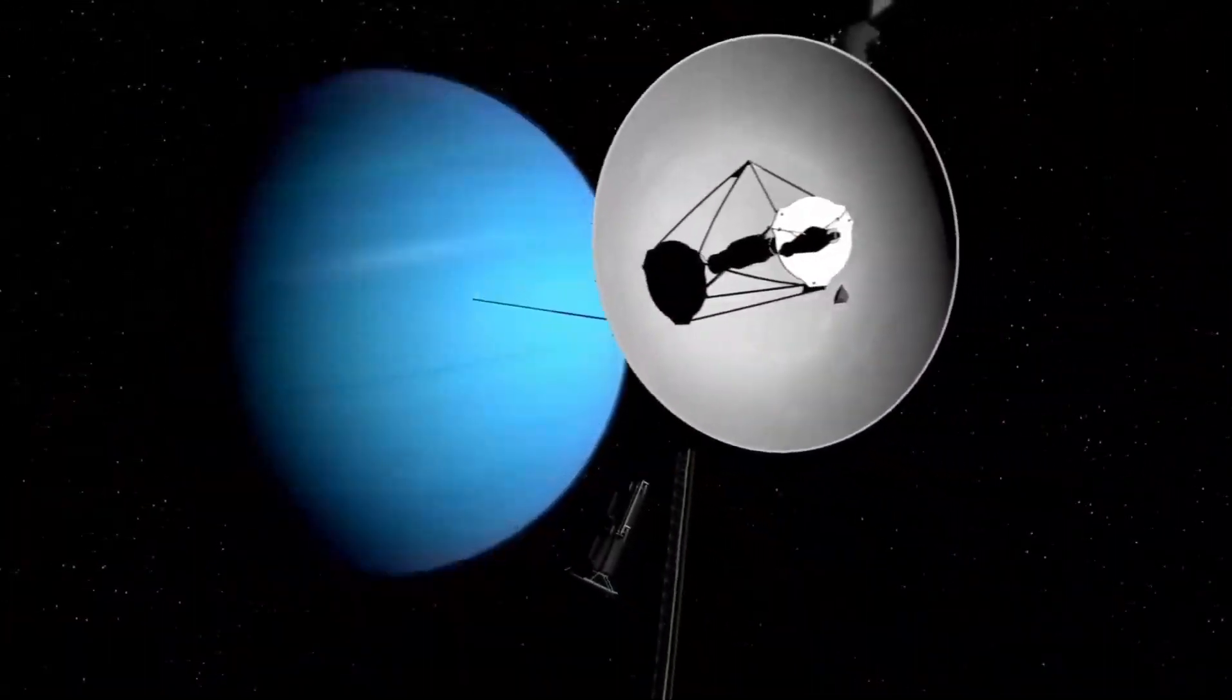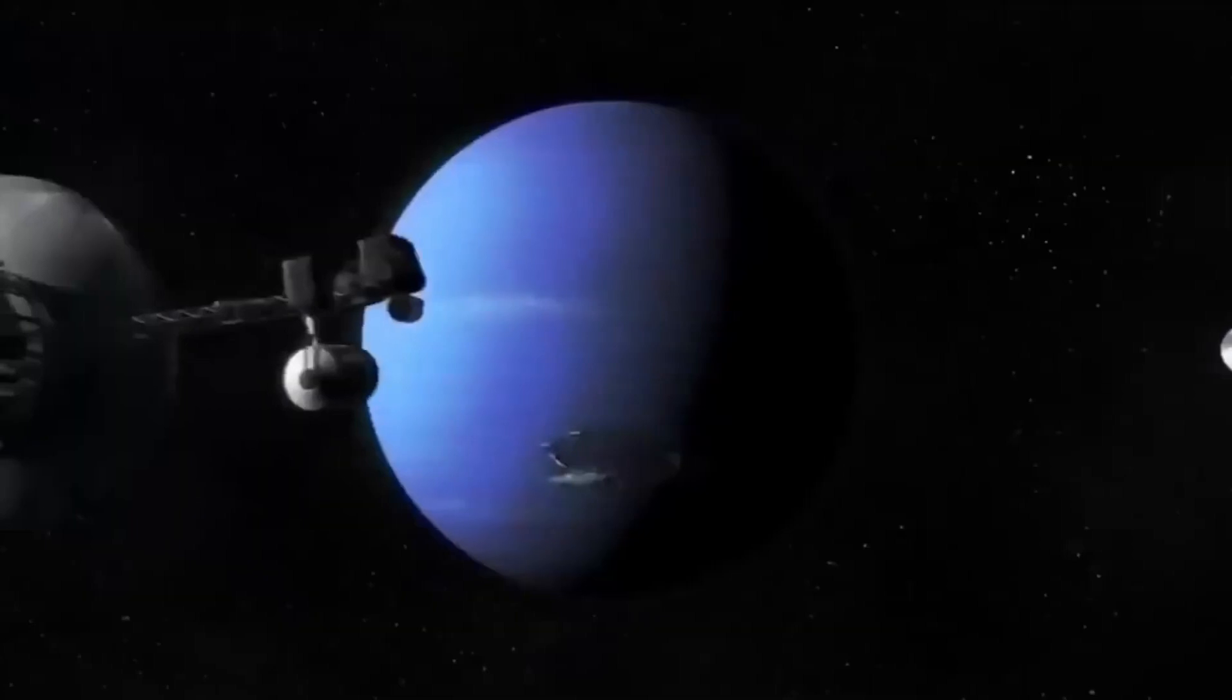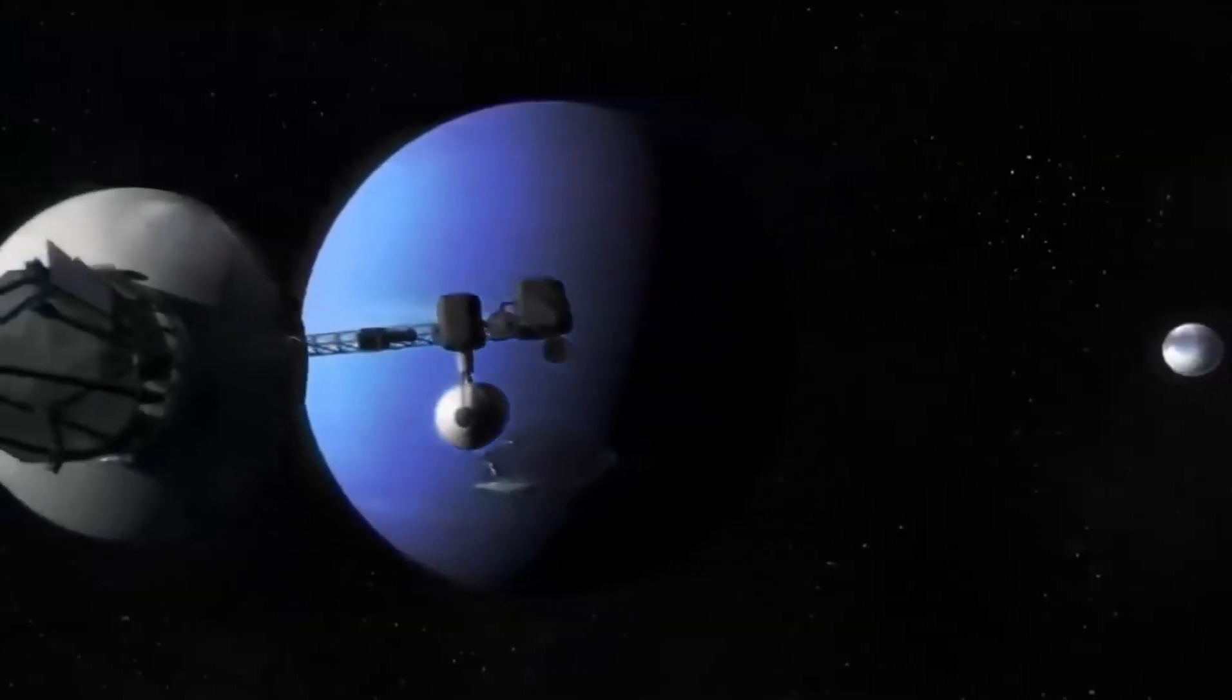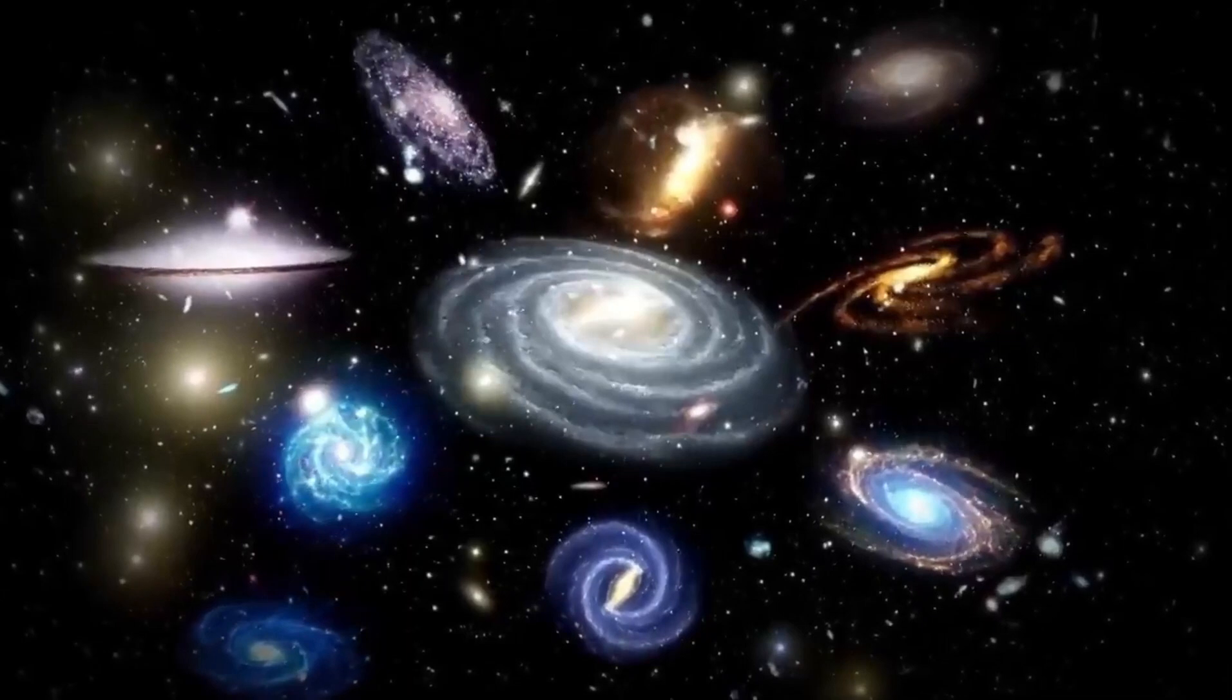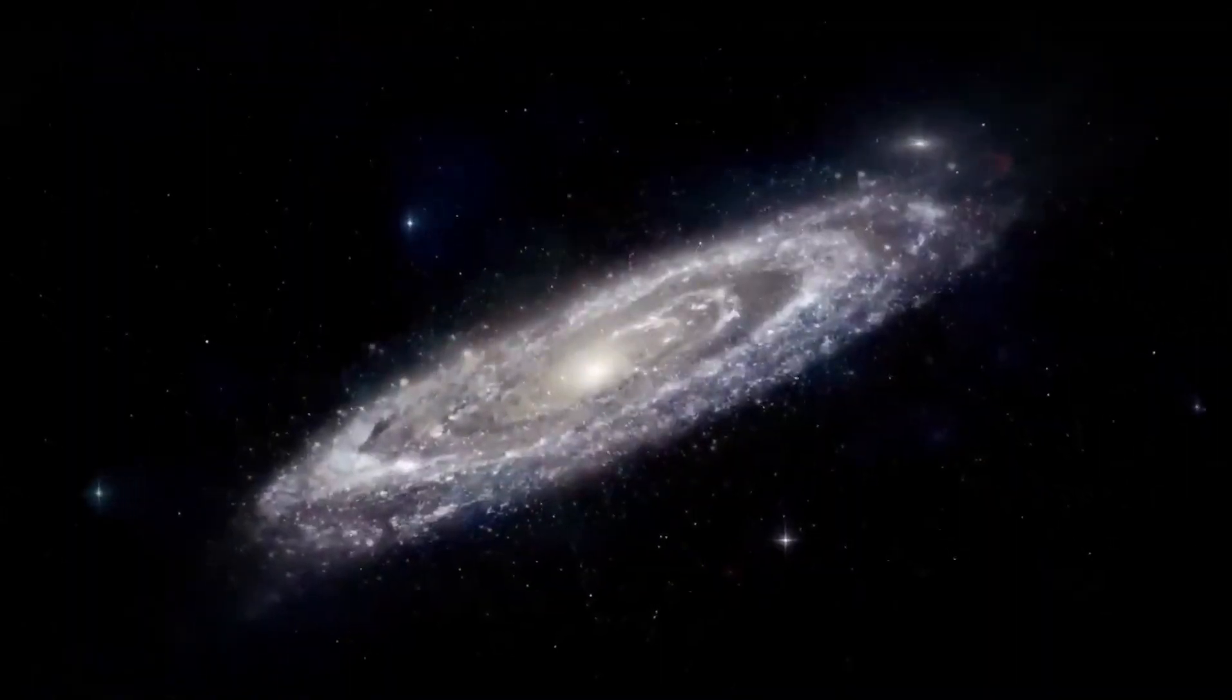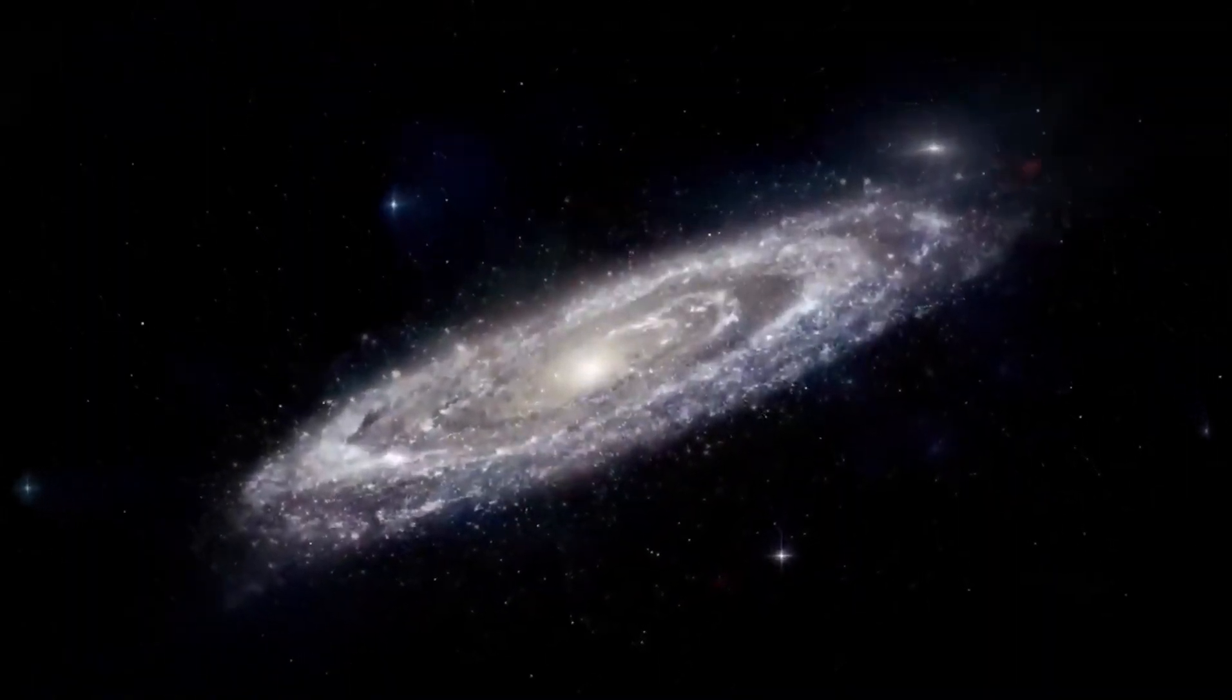As part of the Voyager program, NASA launched Voyager 1 on September 5, 1977, intending to study the outer solar system and the interstellar region beyond the Sun's heliosphere. Voyager 1 launched 16 days after its twin, Voyager 2, and entered interstellar space as the first artificial object to do so.